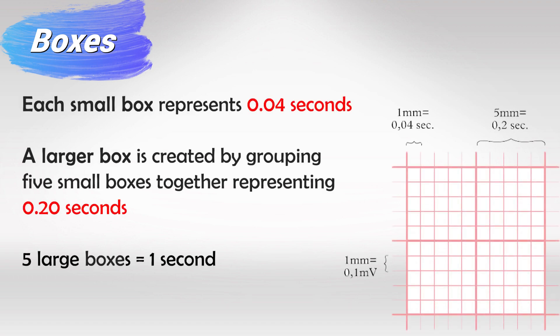Each small box is 40 milliseconds or 0.04 second. If you group five of them together you will have a larger box which indicates 0.2 seconds and five larger boxes indicates one second.